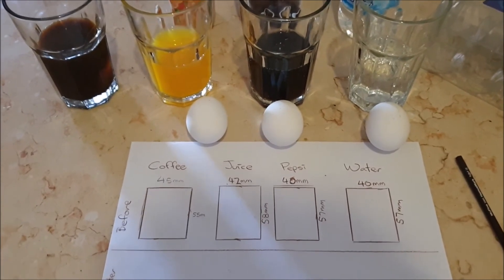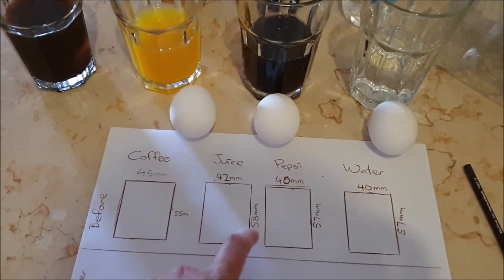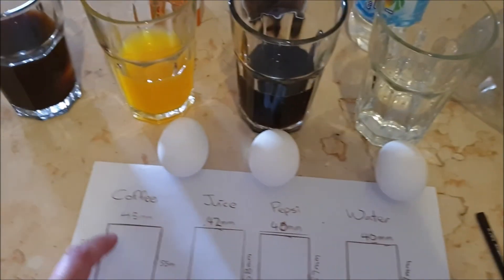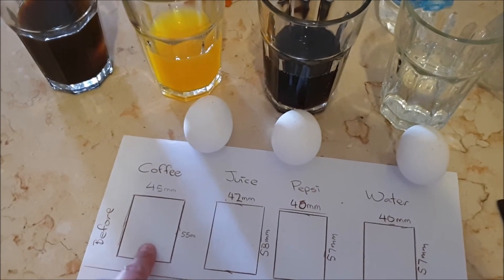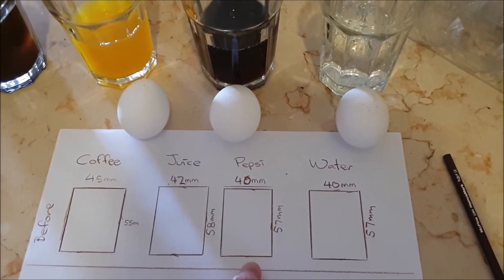Here I've done my other measurements for the other three eggs. So the juice egg you can see is 42 by 58. So it's a little bit thinner than the first one, but longer.